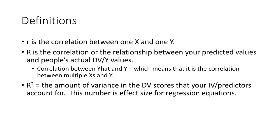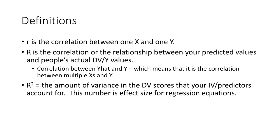We're going to talk about R now — and if you're taking my course, this is the quiz stuff that really trips people up. Little r is the correlation between one X and one Y. Big R is the correlation between lots of X's and one Y — it's really the correlation between Y-hat, your predicted score, and Y. So it's the correlation between multiple X's combined (naps and projects finished) and Y. The difference between little r and big R is the number of X's. Big R-squared is how much of the DV variance your IVs predict — it's our effect size for regression equations.